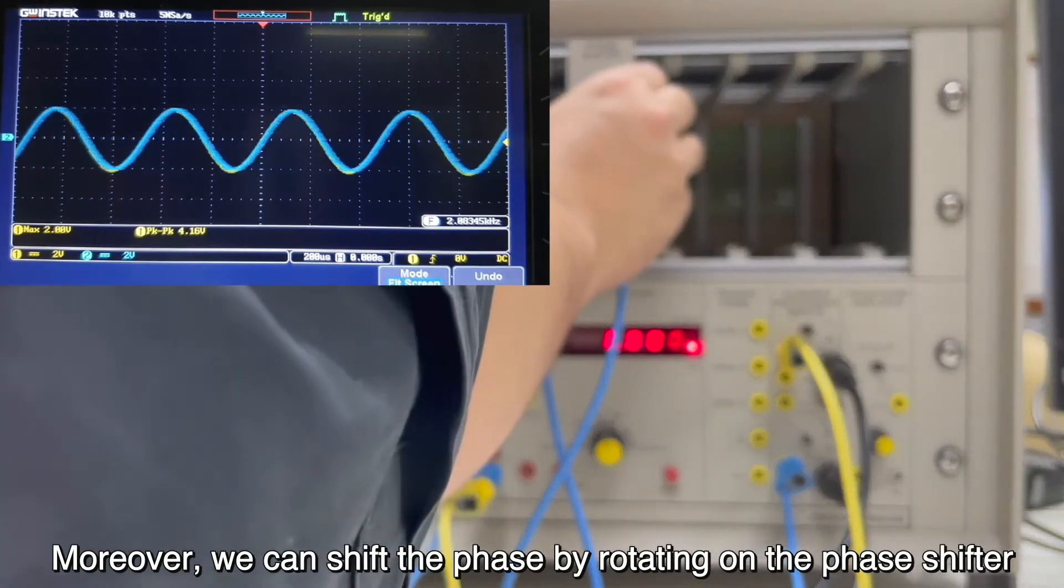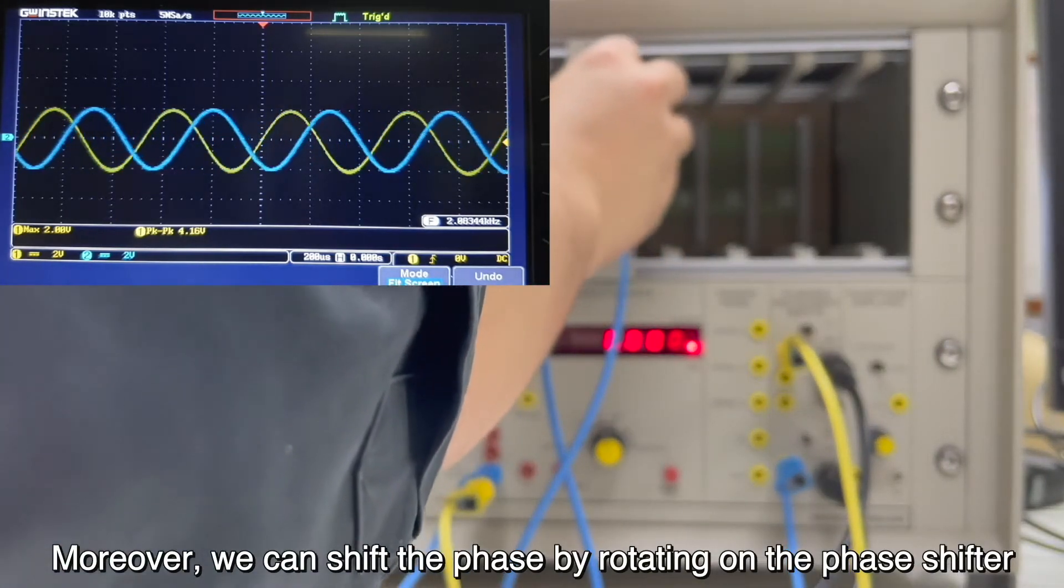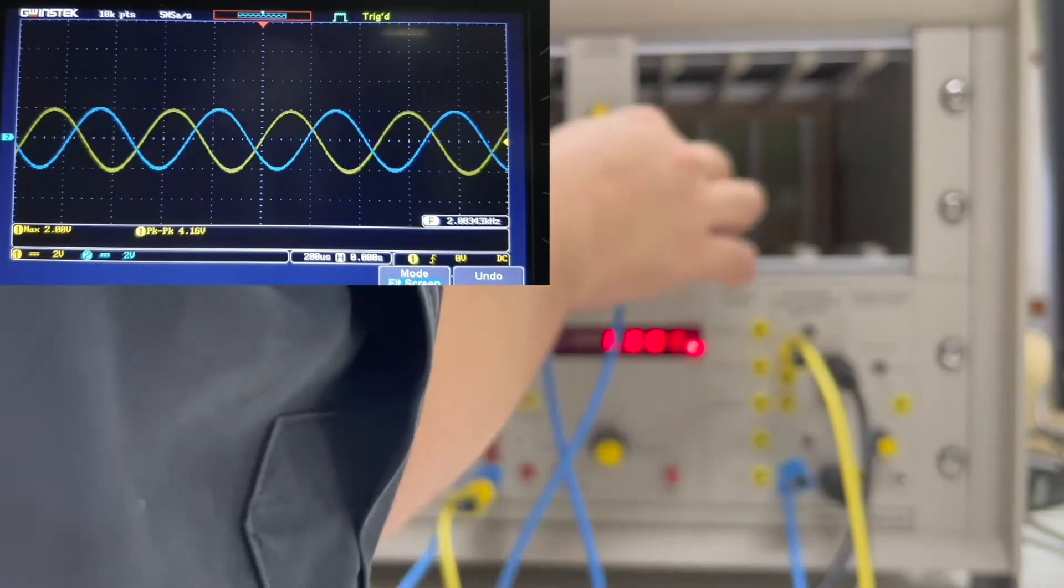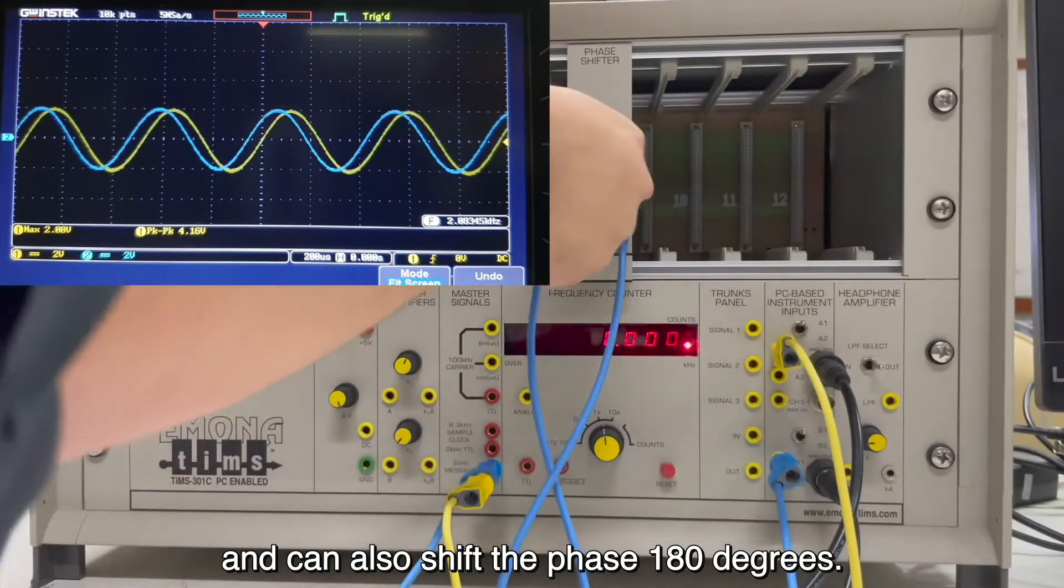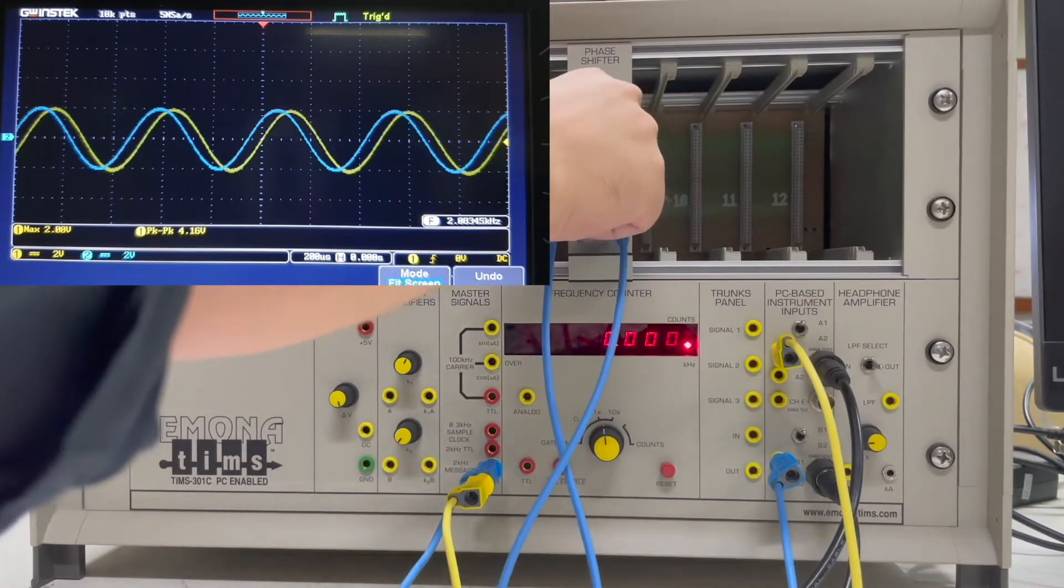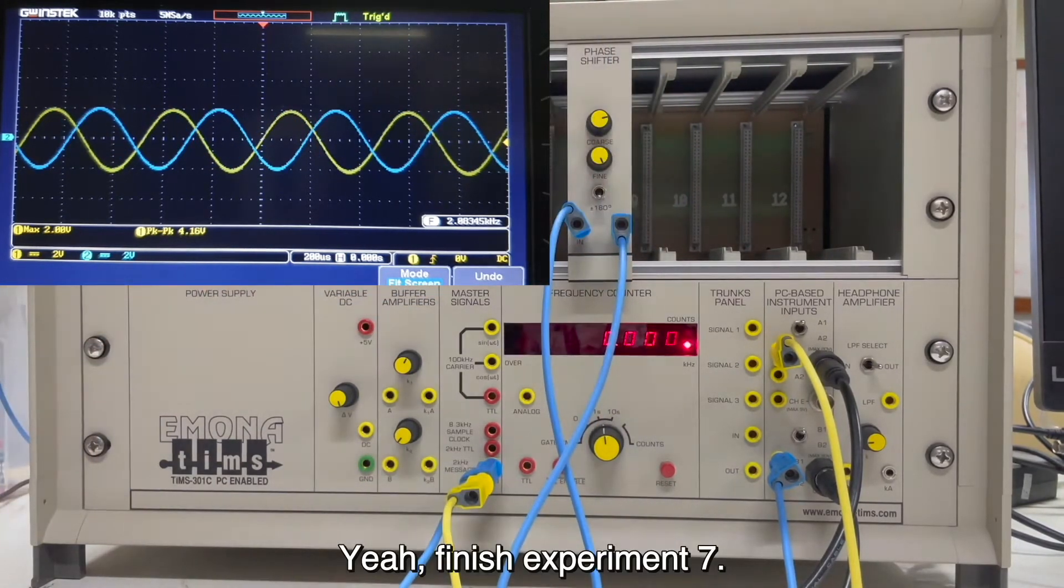Moreover, we can shift the phase by rotating on the phase shifter. And we can also shift the phase 180 degrees. Finish Experiment 7.